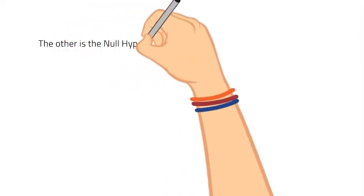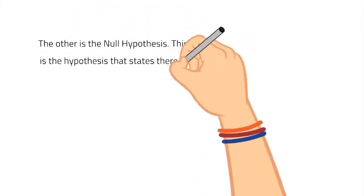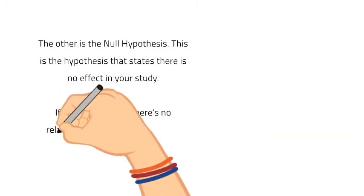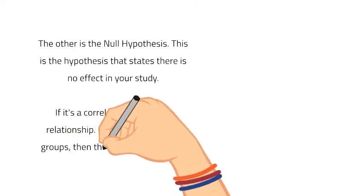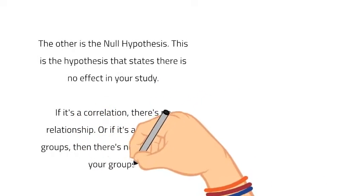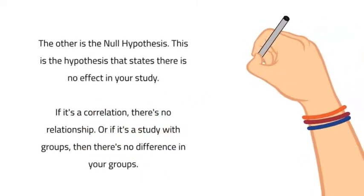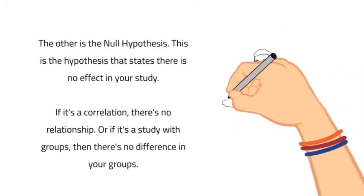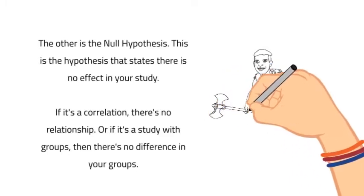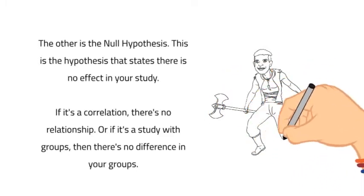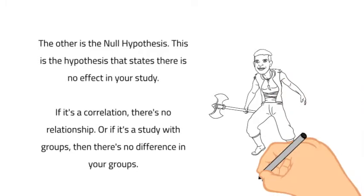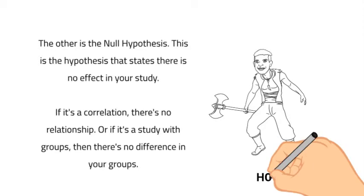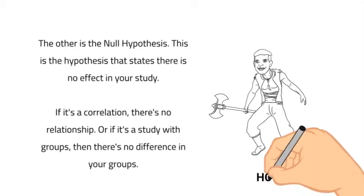The other hypothesis is the null hypothesis. This is the hypothesis that states there is no effect, no difference, or no relationship between the variables in your study. So if this is a correlation, there is no relationship between your variables. If this is a study with different groups, then there's no difference between the groups. The key with a null hypothesis is that it always states there is no difference or no effect. The symbol for a null hypothesis is H0, because zero represents none or null.